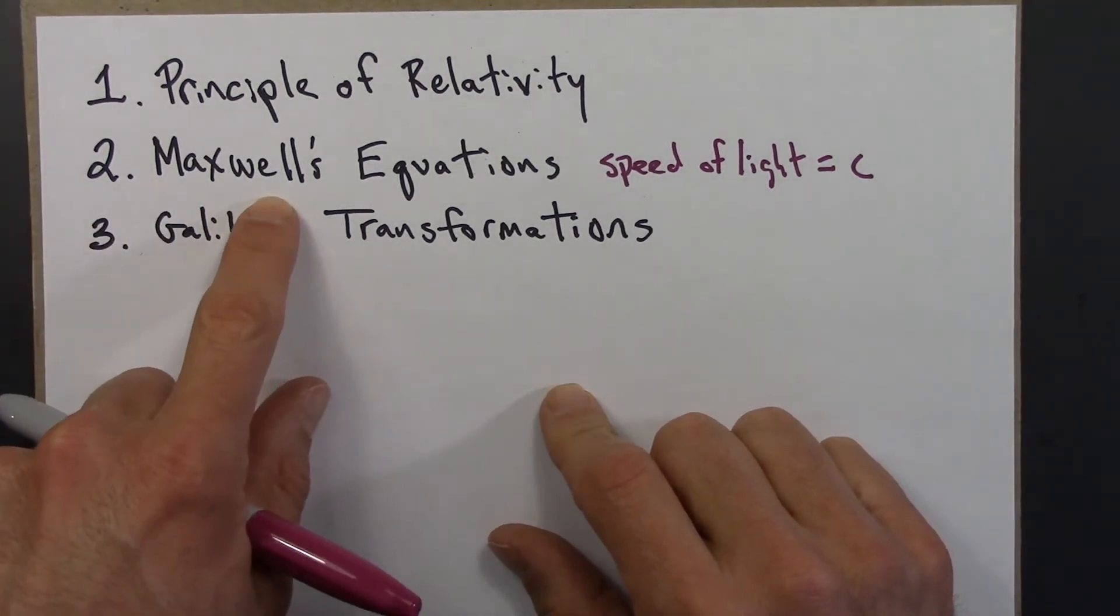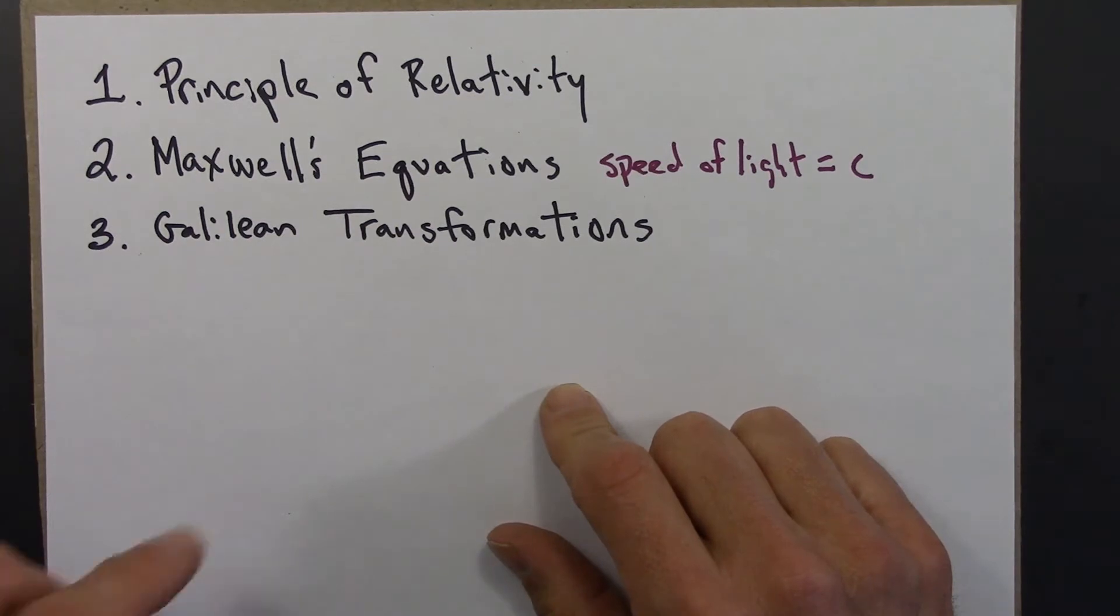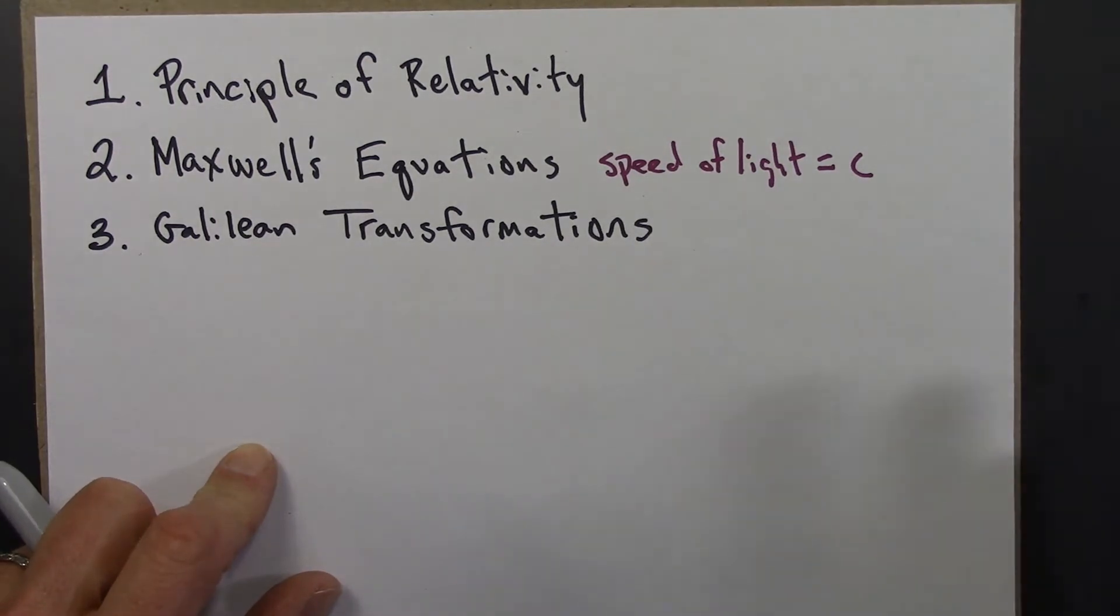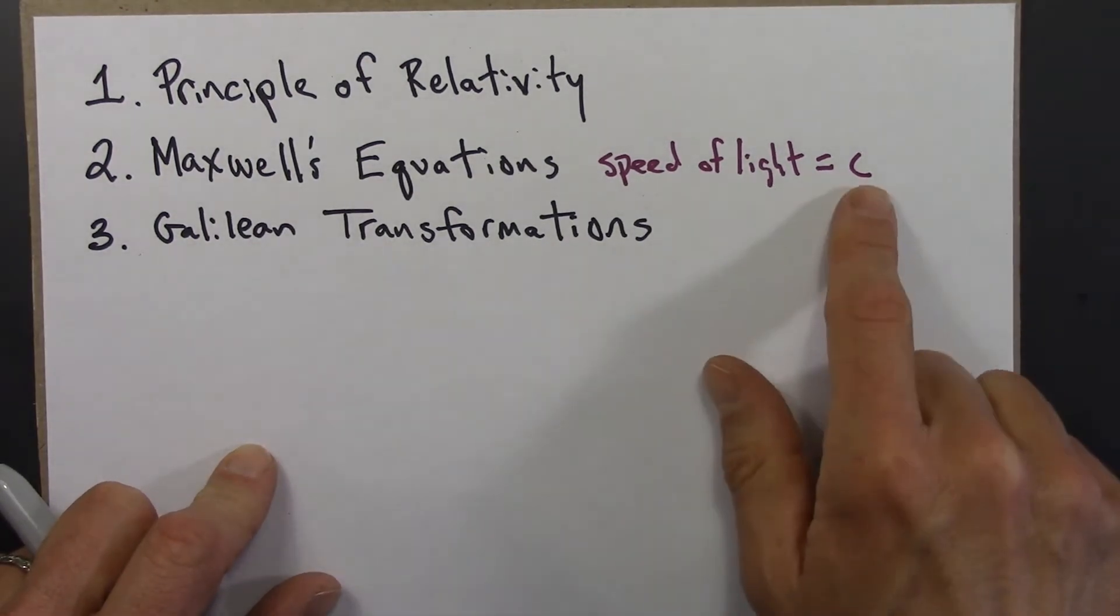Then we have Maxwell's equations. That's a law of physics. And in particular, it says that the speed of light is c. There's one speed for the speed of light, it's c, the speed of light.